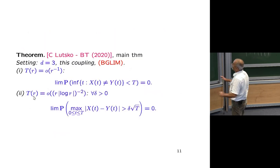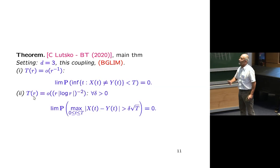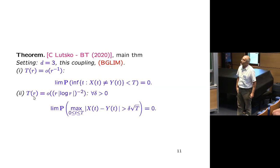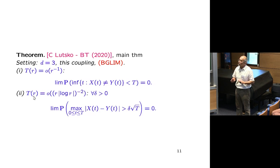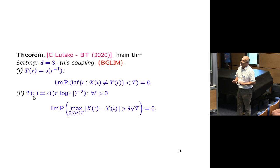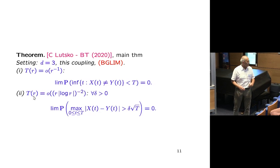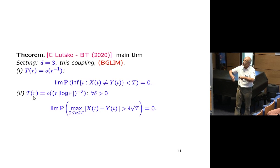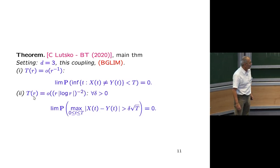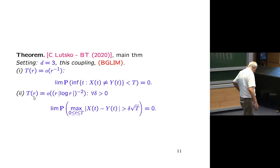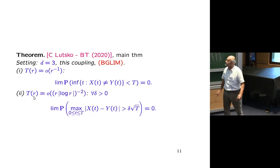Here is the precise formulation of the main theorem. In three dimensions, take the Boltzmann-Grad limit. Up to time of small order 1/r, the two processes are the same. Up to times of order 1/(r log r)^2, the two processes are not identical but the probability that the scaled maximum exceeds delta goes to zero — exactly what is needed for the invariance principle, since we already have the invariance principle for the probabilistic object.